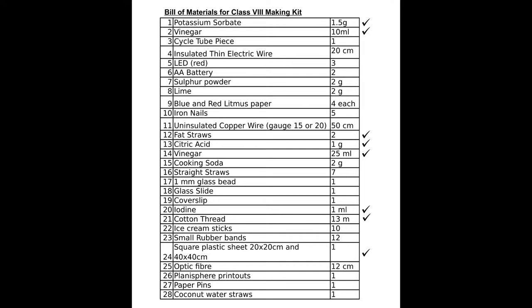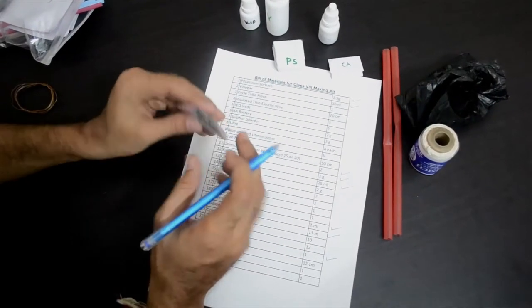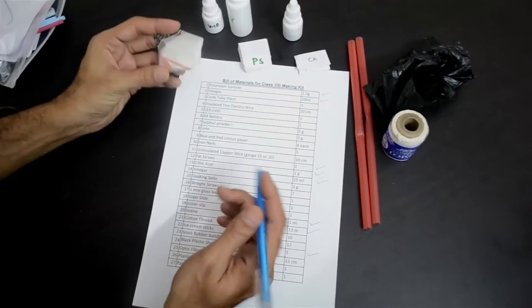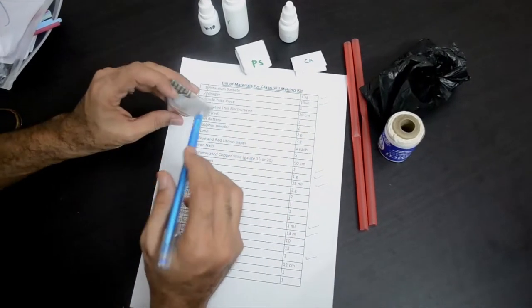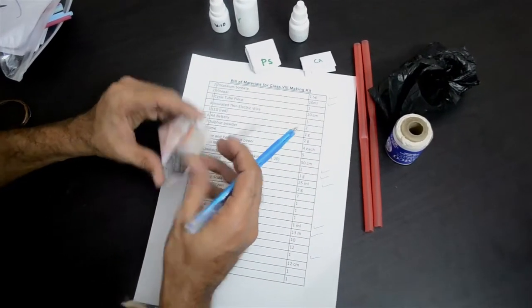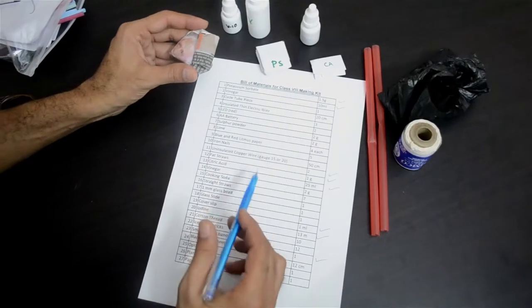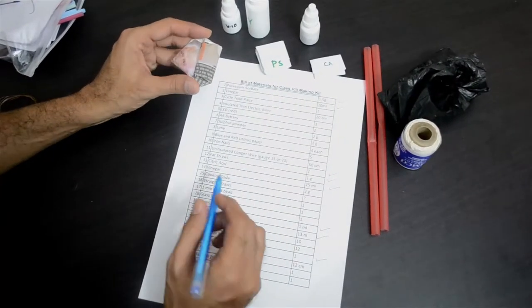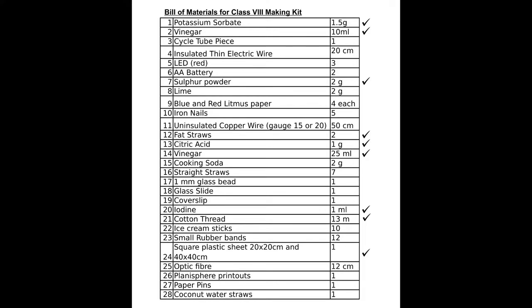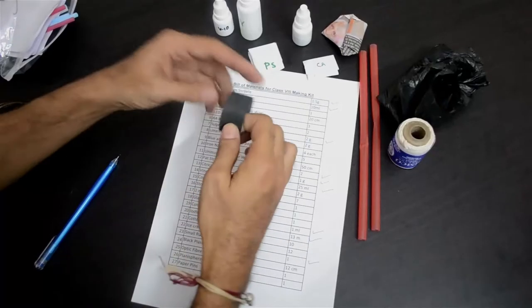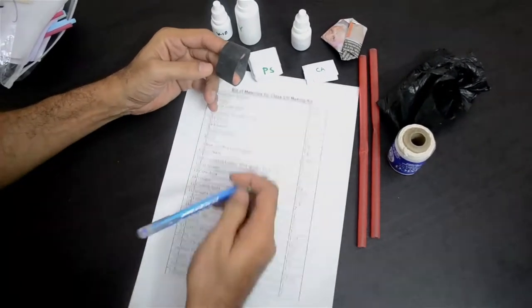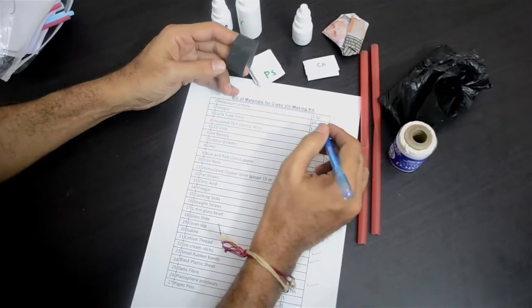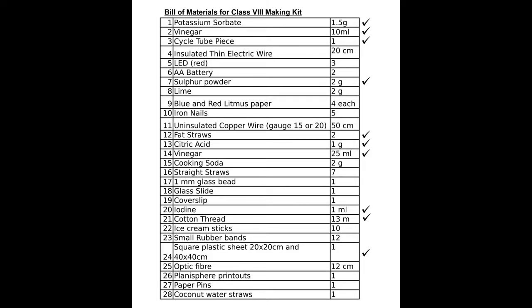Another paper packing. In case it is not labelled, as you can see there are only 3 paper packs, the third paper pack which doesn't have a label is sulphur, which is item number 7, sulphur powder, around 2 grams of that. You will find a cycle tube piece. You will need this for making the connections with the AA battery. So one cycle tube piece.